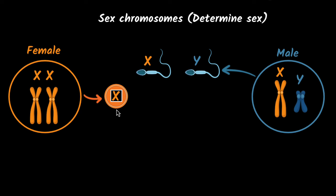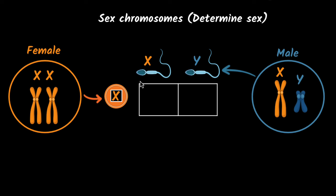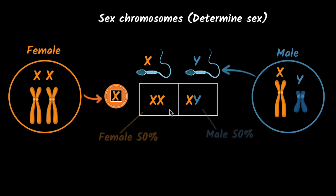So now, if you look at fertilization, if the X-carrying sperm fertilizes the egg, the offspring will have XX chromosomes. Versus if the Y-carrying sperm fertilizes the egg, the offspring will have XY chromosomes. And that's all the combinations we have. This means that one out of two will be female and one out of two will be male — a 50% chance for female and 50% chance for male.